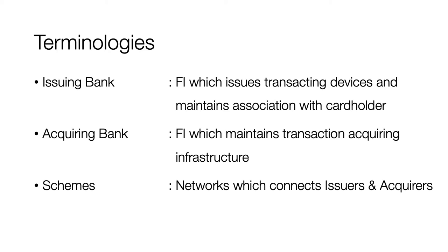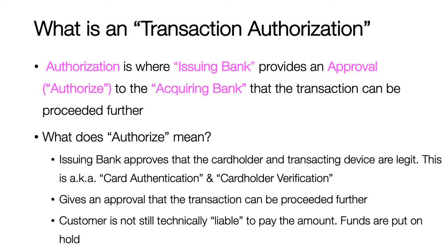Examples of schemes are Mastercard, Visa, JCB, RuPay, UnionPay International, etc. Now let's see what is a transaction authorization. Whenever a customer uses a card for a transaction — for purchasing goods or any services — the acquiring bank presents the transaction to the issuer bank. The issuer bank checks if the card and the cardholder are legitimate and does a bunch of other checks like credit line checks, and if everything passes it provides an authorization approval to the merchant to proceed.